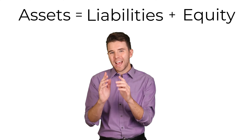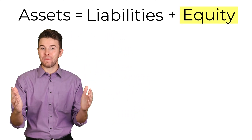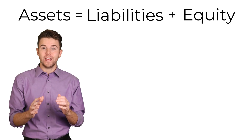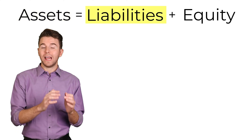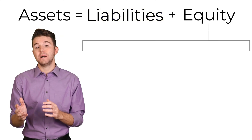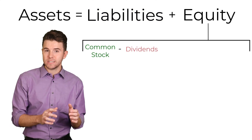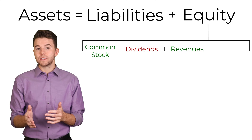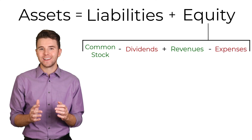Also, the equity part of the accounting equation can be expanded. The expanded accounting equation is assets equal liabilities plus common stock minus dividends plus revenues and minus expenses. I know that sounds like a lot, but I think it will make more sense as we go through some transactions.